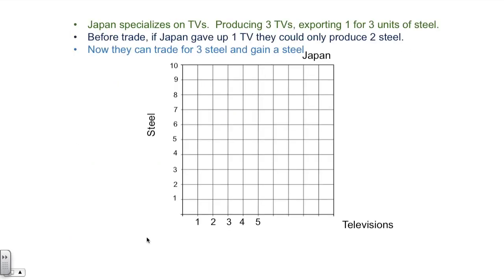Now the way that we can analyze the gains from trade is by looking at the total PPF for these countries in the production of steel and televisions. For this, I'll select Japan. Japan, when they produce all steel, they can produce six total steel or three total televisions or somewhere in between. Now, in this example, Japan is going to produce all televisions because that's what they have a comparative advantage in.